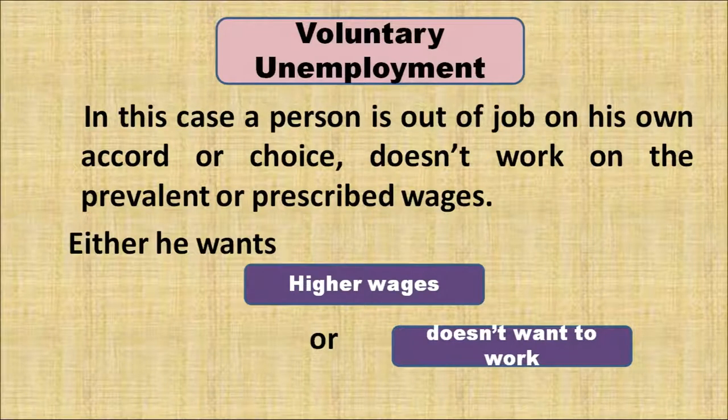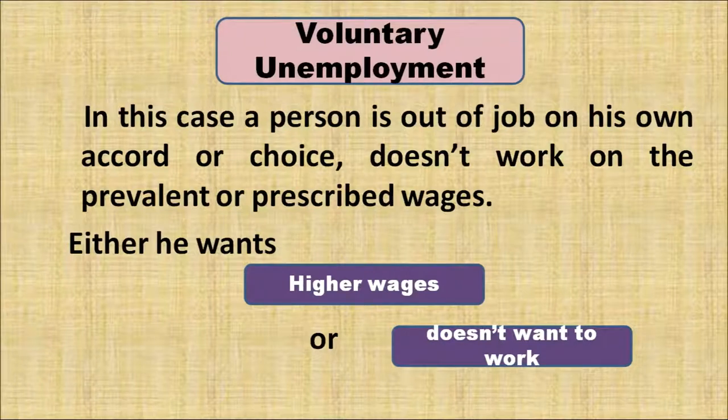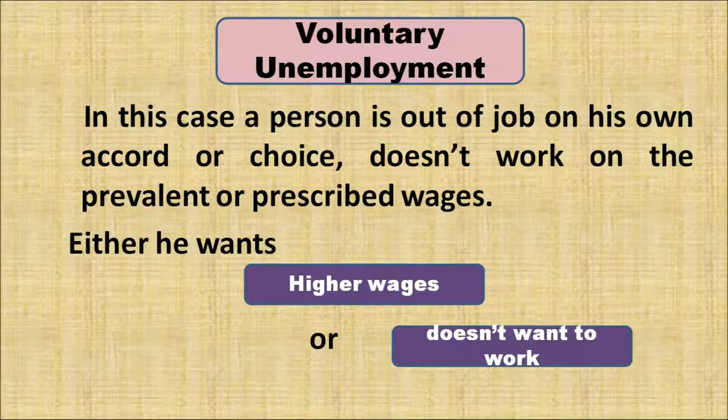Voluntary unemployment is the case in which a person is out of a job on his own accord or choice, and doesn't want to work at the current wage rate prevalent in the market — either he is looking for higher wages or simply doesn't want to work. For example, Person A is not willing to work in any available employment opportunity because he may have a good amount of money, so he is not willing to work and will be called a voluntarily unemployed person. Similarly, if a person expects a higher wage and is not accepting employment at the current prevailing rate, that will also be voluntary unemployment.